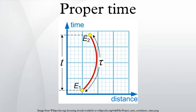By convention, proper time is usually represented by the Greek letter tau to distinguish it from coordinate time represented by T.